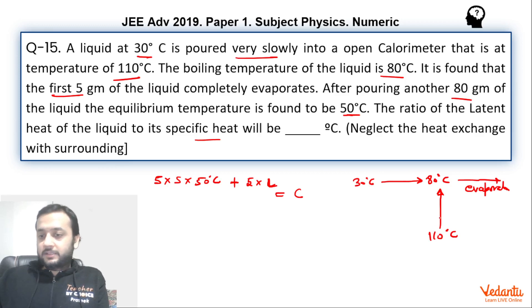So we can say that heat capacity into change in temperature which is 110 minus 80. So this will become 30.